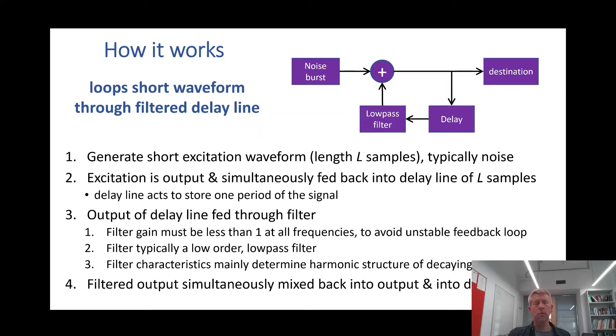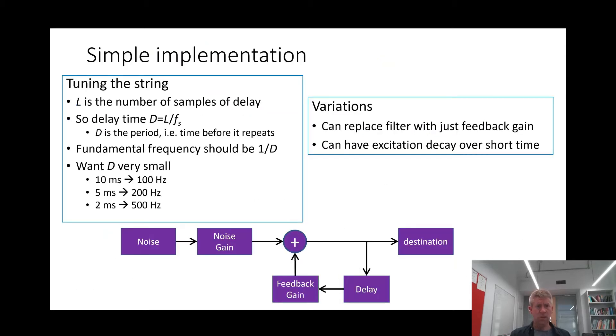But we've already worked with feedback delay, so what's going to make this actually work as a model, sound like a string? So the important thing is not the length of the noise that's put in in the beginning but the length of the delay right here. In the original implementation they were the same length but they don't have to be. If the number of samples of delay is L, then that's the same as having a delay time in seconds of L over the sampling frequency, sampling frequency here written as F sub S.